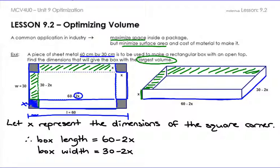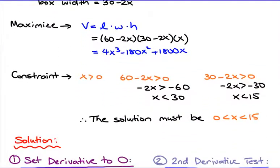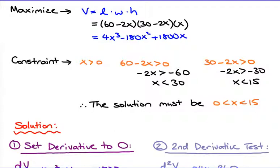Since we have the length and the width, we also have the height — remember, the height is X itself, the size of those cut corners. Once you fold it up and put it together, you have all three dimensions of your box with no top. We're letting X represent the dimensions of the square corners, so the length is 60 minus 2X, the width is 30 minus 2X, and the height is X. Conveniently, everything is already in terms of X, so we only have two letters — V and X — and don't need to use a constraint formula to eliminate a variable like we did in the last video.